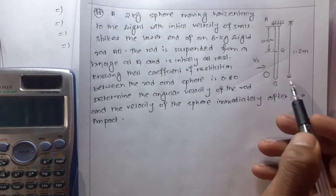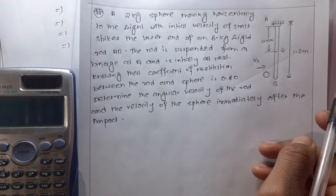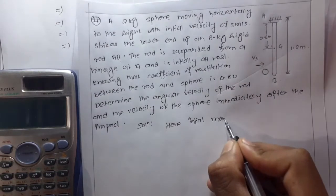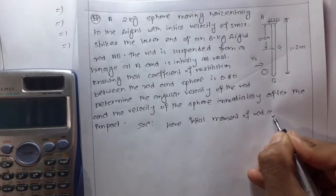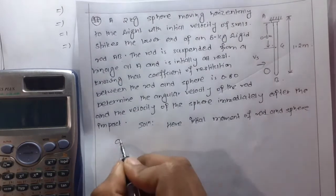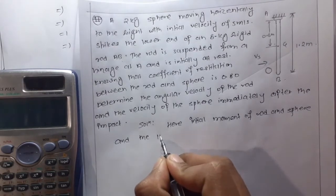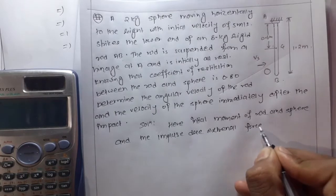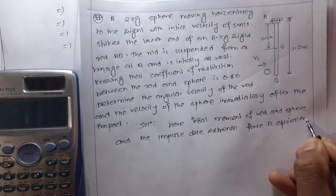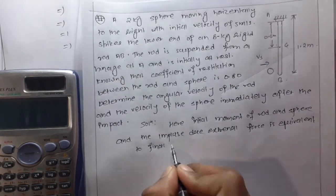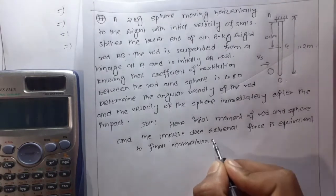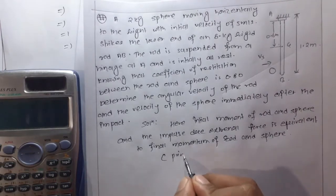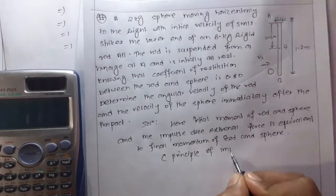For this solution, here the initial momentum of the rod and the sphere and the impulse due to external force is equivalent to final moment of rod and the sphere. This is simply the principle of impulse and momentum.